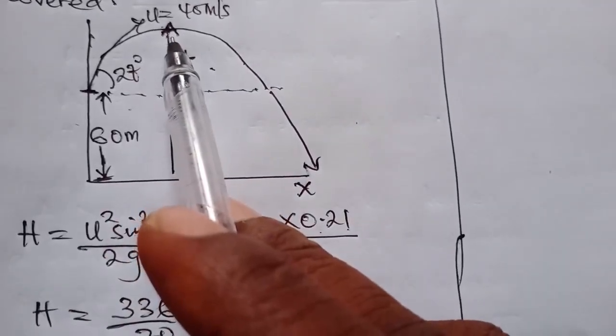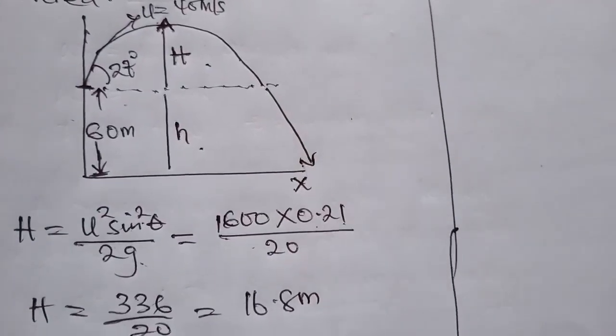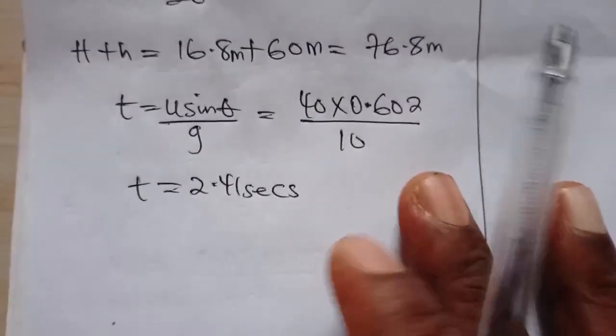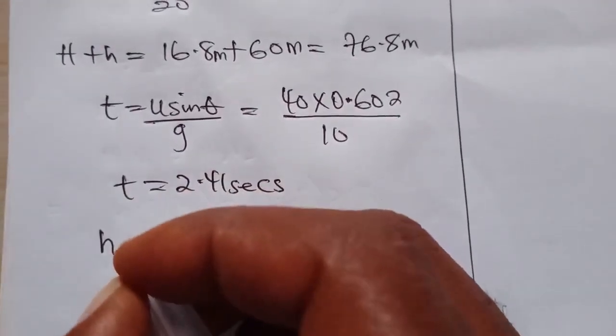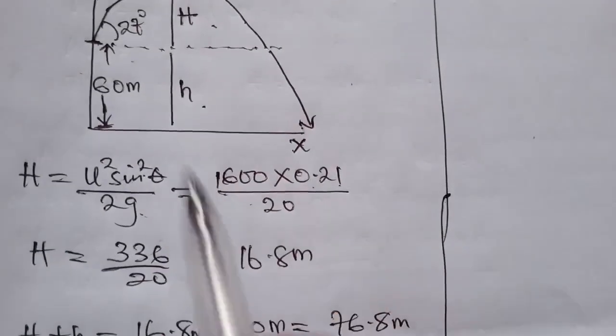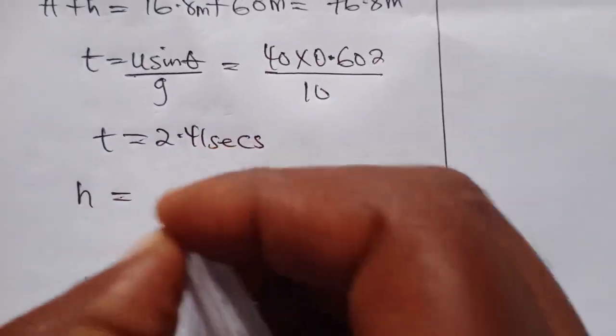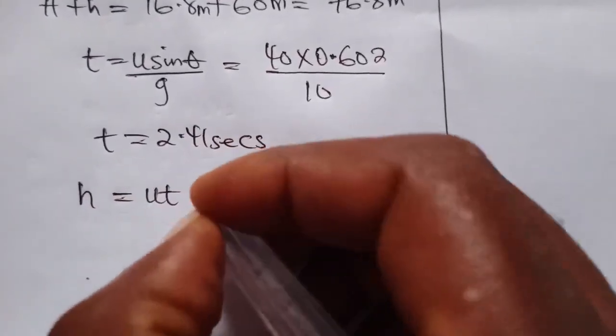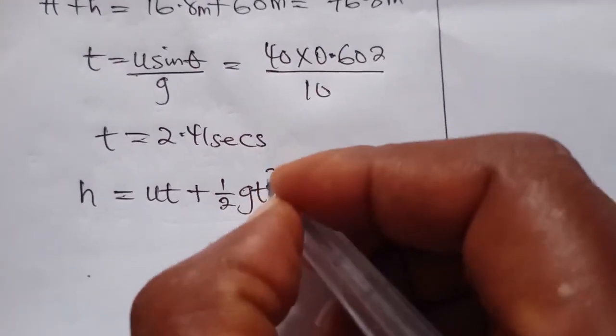Now this is the time it took to get to this point, but what we want to calculate is the time it took to get to the ground. So we are going to use the formula that says that h is equal to ut plus 1/2 gt squared.